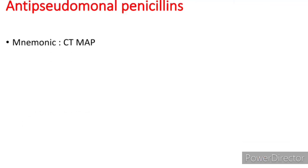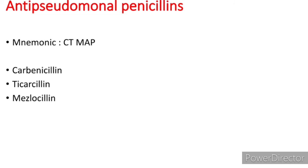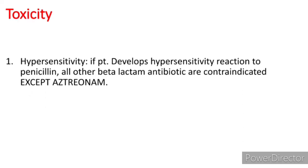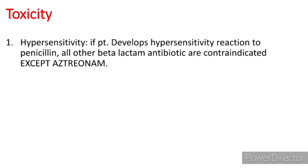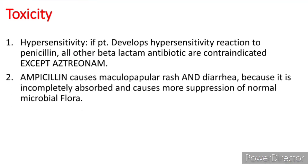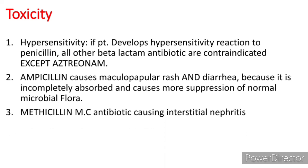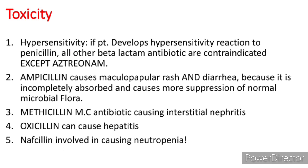Anti-pseudomonal penicillins are the same as extended-spectrum penicillins, just excluding Ampicillin and Amoxicillin: Carbenicillin, Ticarcillin, Mezlocillin, Azlocillin, and Piperacillin. Regarding toxicity: hypersensitivity is the most common. If a patient develops hypersensitivity to penicillin, all other beta-lactam antibiotics are contraindicated except Aztreonam, which is a monobactam. Ampicillin causes maculopapular rash and diarrhea. Methicillin is the most common antibiotic causing interstitial nephritis. Oxacillin can cause hepatitis. Nafcillin is involved in causing neutropenia — remember N with N.